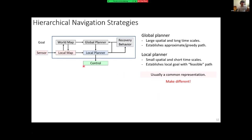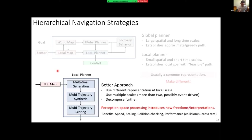Usually both the global and local planners use the same representation — the traditional world representation. My research over the past few years has been looking at how we can take the local planner and move to a perception space processing modality. Once you do that, you have to make representational and computational decisions. What we found is that perceptual processing tends to be faster, scales more nicely as a function of sensor throughput — basically linearly — and you can do collision checking faster.